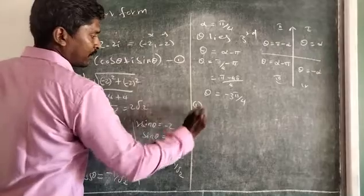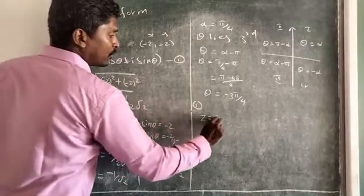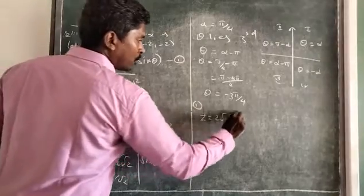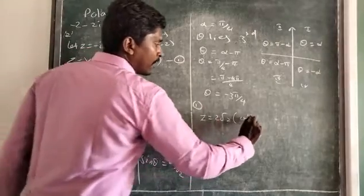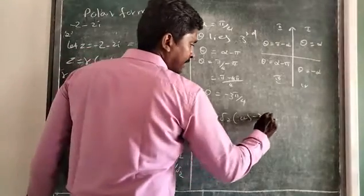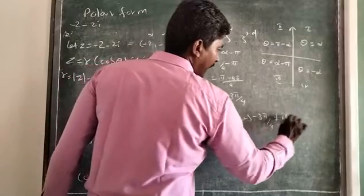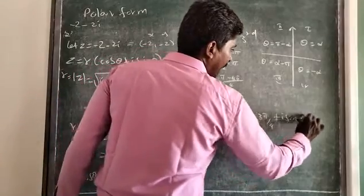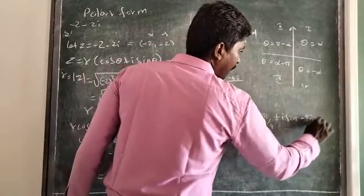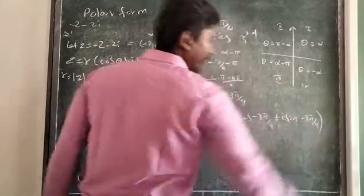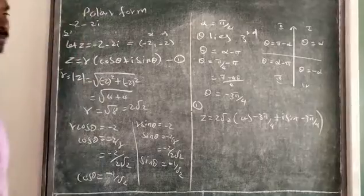Now, enter theta. Theta lies in the third quadrant, so the condition is θ = α − π. Therefore θ = π/4 − π = (π − 4π)/4 = −3π/4. This is theta. You know r = 2√2 and θ = −3π/4, so substitute into the polar form equation.